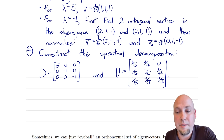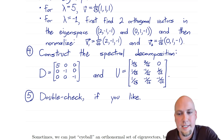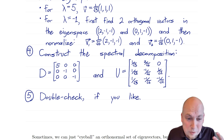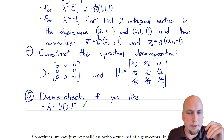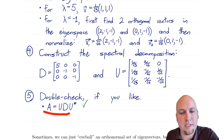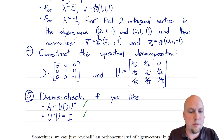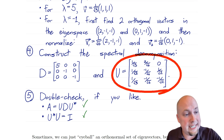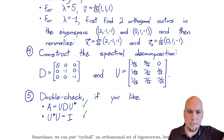That's our spectral decomposition. To double-check, verify two things: first, that computing UDU* gives back the matrix A you started with; and second, that U*U = I, confirming U really is unitary.